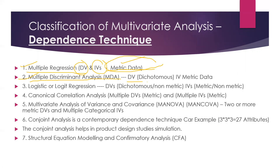In multiple discriminant analysis (MDA), the DV is dichotomous and IV is metric data. Dichotomous means only two options — like male and female, or married and unmarried. For logistic regression, the dependent variable can be dichotomous or non-metric, and the IV can be metric or non-metric. The dependent variable will not be metric data in logistic regression.